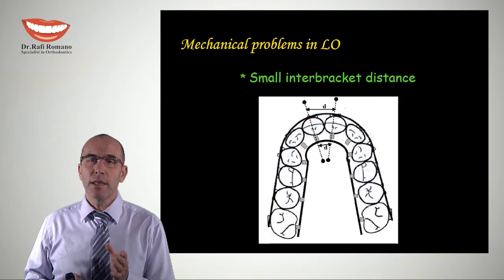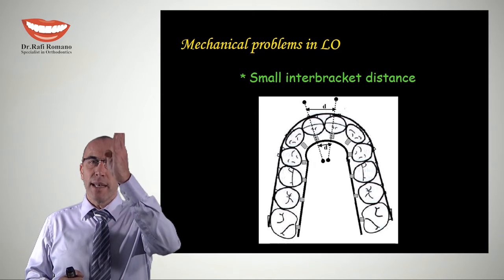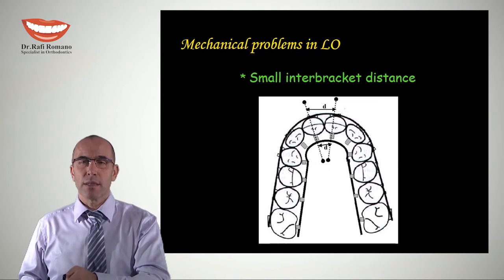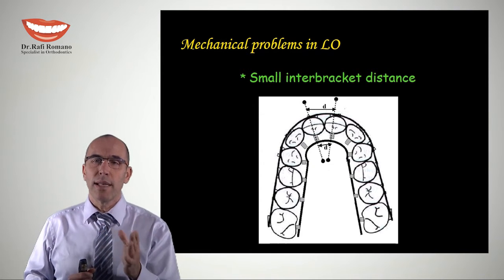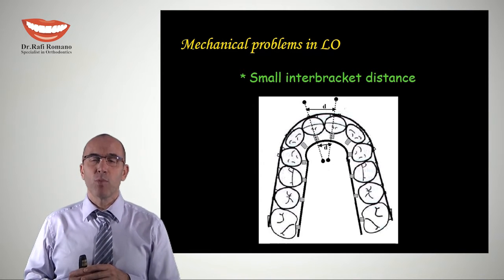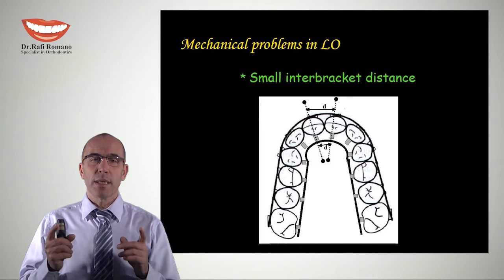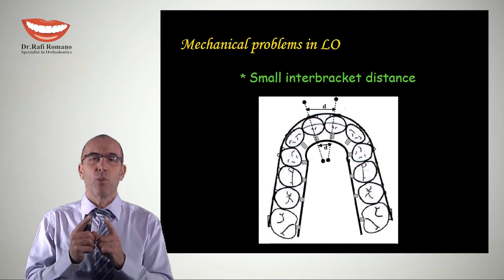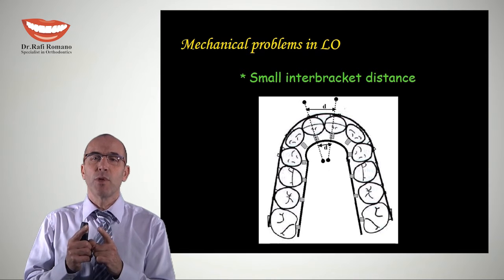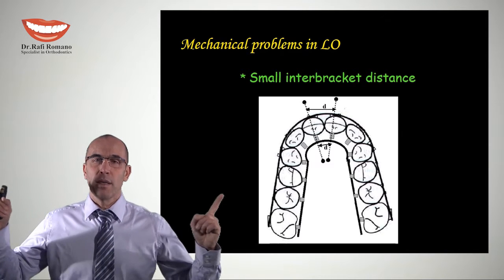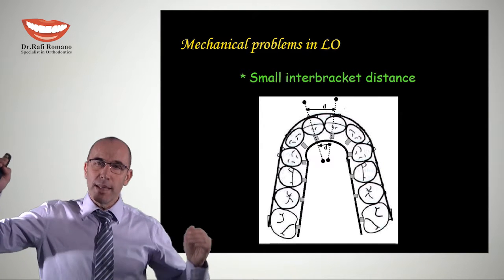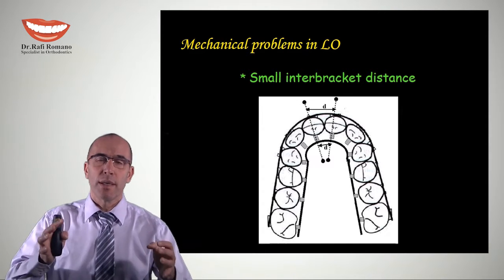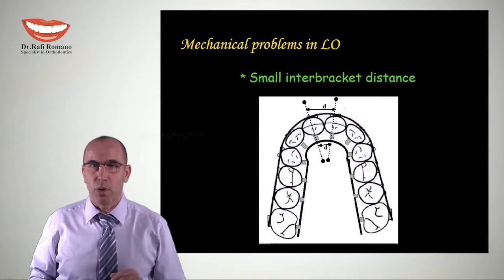If you take a line through the long axis of the tooth and look at the buccal and lingual brackets, sometimes when we have crowding, the distance between two lingual brackets is almost zero while the distance between two buccal brackets is very large. This is why it's easier to create big moments in buccal versus lingual orthodontics.